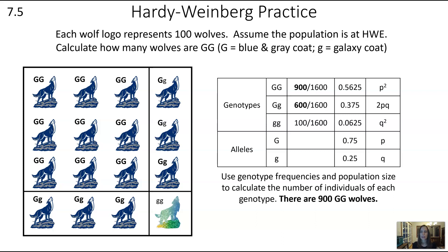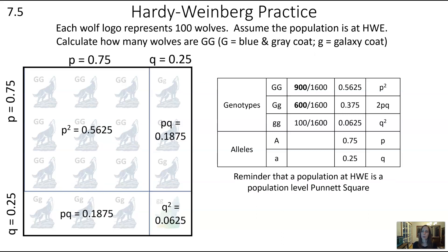You can visualize this again by thinking about the Hardy-Weinberg problem as a population-level Punnett square. The upper left quadrant represents all of the wolves from the combination of two dominant alleles. So if p is 0.75, you take 0.75 times 0.75, which gives the frequency of the homozygous dominant genotype. Multiply by the population size and that gives you the total number of wolves.